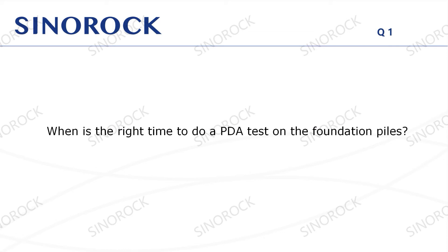Question 1: When is the right time to do a PDA test on the foundation? The specific test period should refer to the requirements of the corresponding specification or standard. According to a lot of testing experience, for bored piles, the PDA test can be carried out when the pile foundation reaches the strength requirements, after about 28 days of pile formation. For RC piles or spun piles, the pile rest period should be reached and the test should be carried out about 14 days after piling.